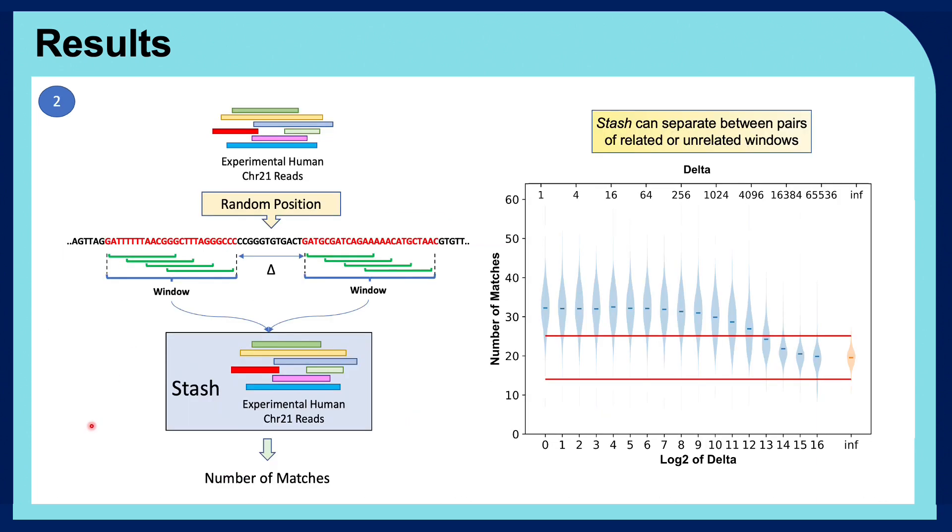As for the second experiment, we fill stash with the same experimental human chromosome 21 reads as the previous experiment. And by considering these reads, we choose a random position on them, which helps us extract two windows with a distance of delta with each other. And we give these windows as input to stash and calculate the number of matches between them.